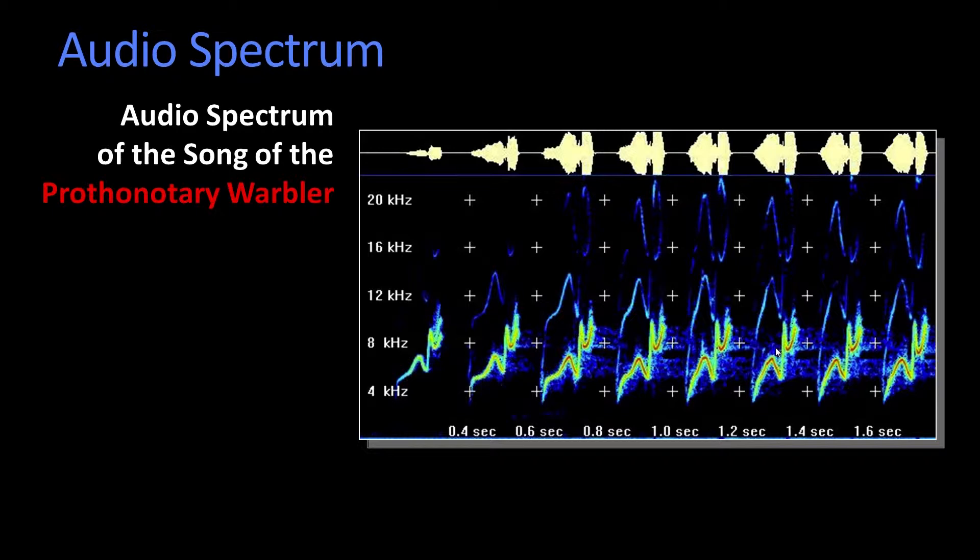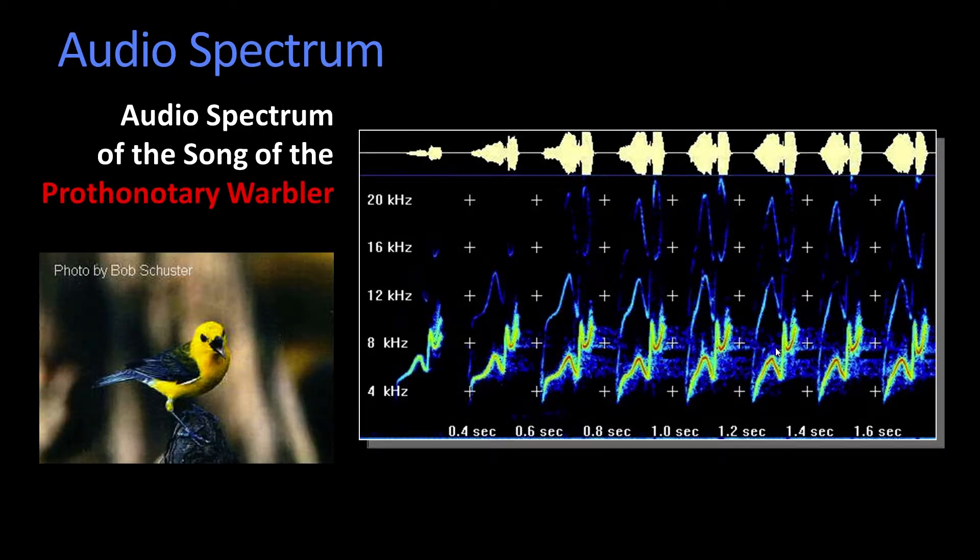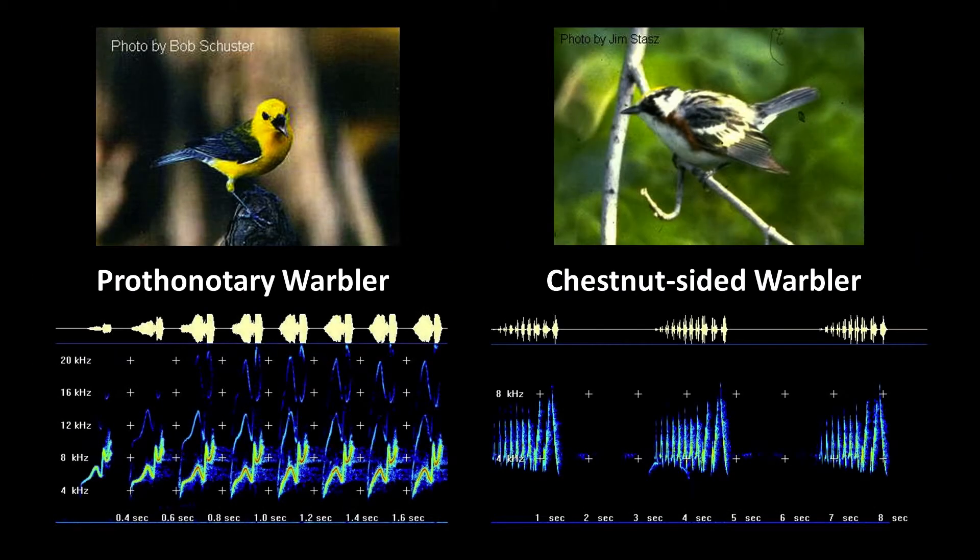Obviously, it's the song spectrum of the prothonotary warbler. Obviously I'm not a bird person. But the idea is, if you listen to this bird chirp and process it over time, you would see this audio spectrum. The spectra of different birds are different. Here's two different birds: the prothonotary warbler and the chestnut-sided warbler. You can see the spectra are really quite different.